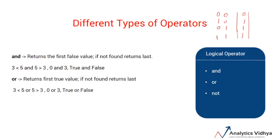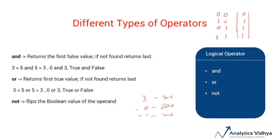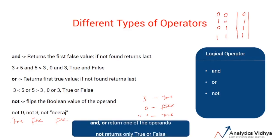Let's move to the last logical operator, that is the NOT operator. NOT operator flips the boolean value of the operand. Every value or number has an associated boolean value. For example, 3 has a boolean value of true, and 0 has a boolean value of false. Any non-zero value or string has a boolean value of true; only 0 has a boolean value of false. For example, applying NOT on 0: since 0 is false, NOT flips it to true. For NOT 3: since 3 is true, NOT 3 is false. Similarly, any non-zero value represents true, so NOT of it is false. Note that AND and OR return one of the operands, while the NOT operator always returns only true or false.